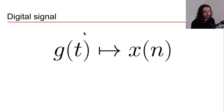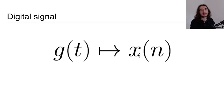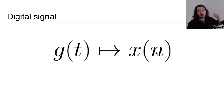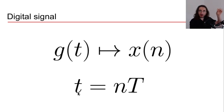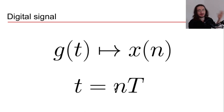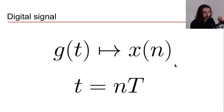When we digitalize the signal, our original analog signal g(t), which is continuous in time, gets transformed into x(n). The convention x(n) tells us we are taking samples. The key point is that n is discrete — we have n=0, n=1, n=2, n=3. x(n) is a sample taken at a particular time t, which equals n multiplied by the sampling period T.